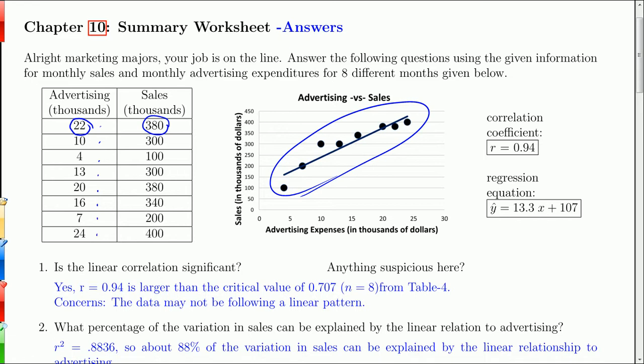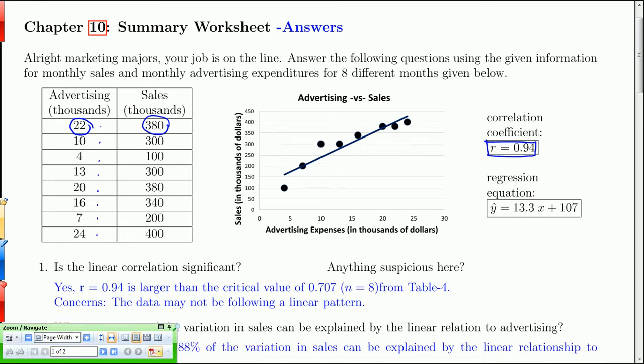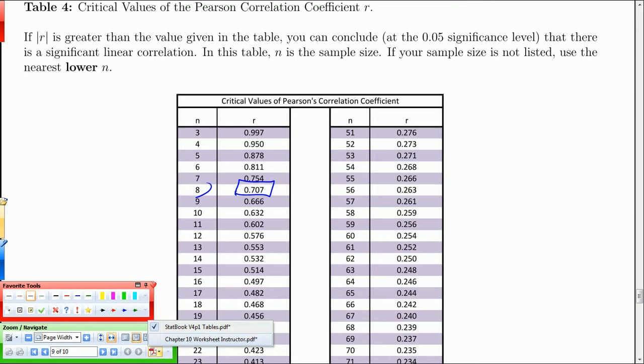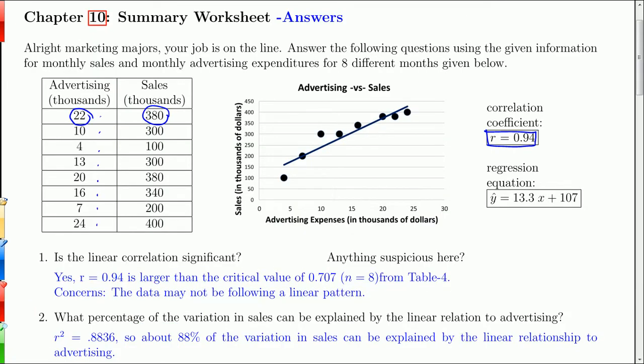What you can see is that there's a positive correlation between advertising expenses and sales. If you're in the marketing department, you can justify the money you spend on advertising. The correlation coefficient for these points is 0.94, and here is the regression equation. I'm going to go through here and ask a whole lot of questions.